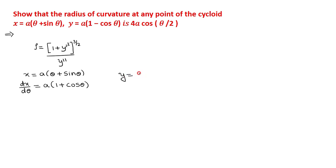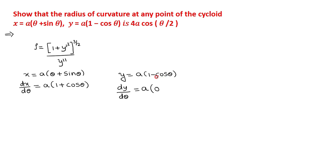For y equals a(1 minus cos θ), differentiating with respect to θ gives dy/dθ. The derivative of 1 is 0, and the derivative of negative cos θ is plus sin θ. So dy/dθ equals a sin θ.